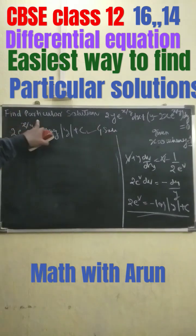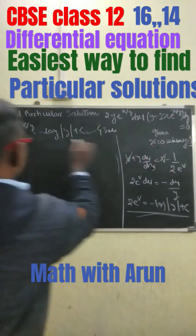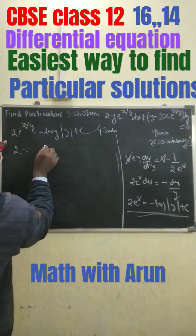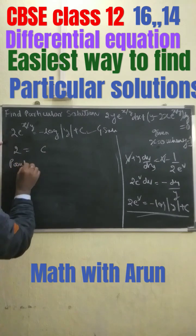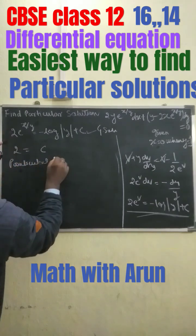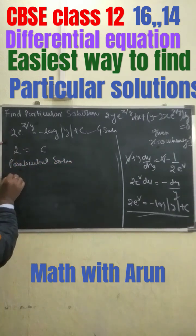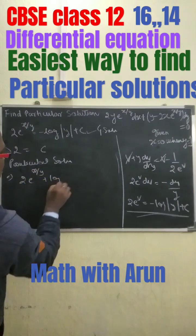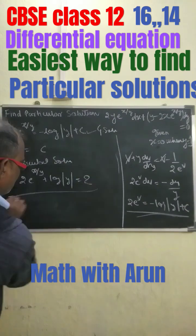Now we have to find the particular solution. When x equals 0, putting x equals 0 gives 2 equals c. Therefore the particular solution is 2^(x/y) divided by ln 2 plus log y equals 2.